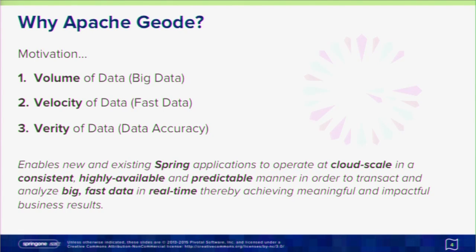So why is a technology like Apache Geode important? Three reasons: volume of data, rate of events, and the need for real-time processing. The amount of information we capture today has vastly increased, partly due to connected devices — from mobile to sensors. GE generates something like 300 gigabytes of data per flight every day. Subsequently, the rate of events has vastly increased, making real-time accuracy critical for deriving meaningful and actionable business results.